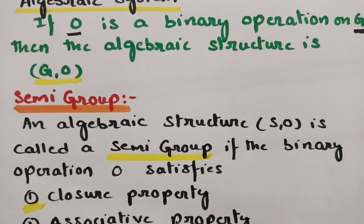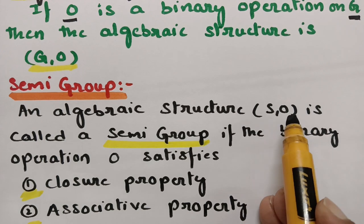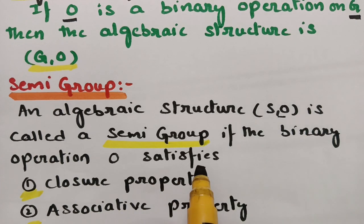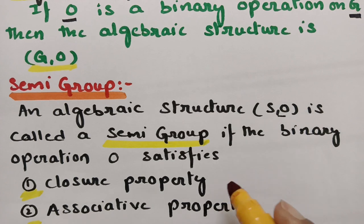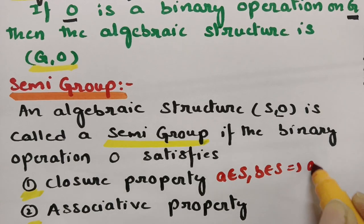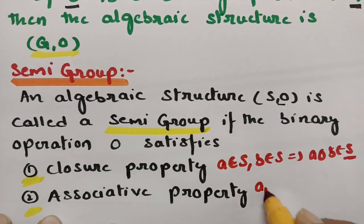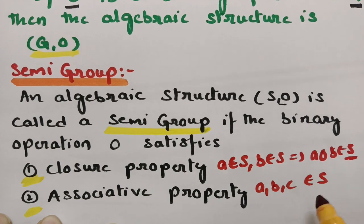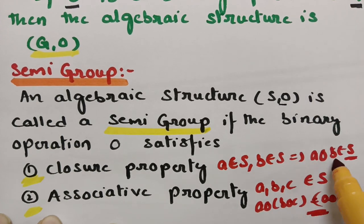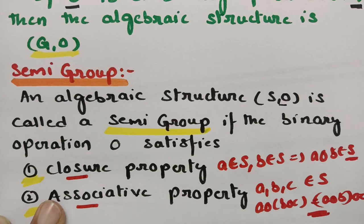What is a semi-group? An algebraic structure (S, circle) is called a semi-group if the binary operation satisfies two properties. First is the closure property: if A belongs to S and B belongs to S, then A circle B should also belong to S. Second is the associative property: if A, B, C belong to S, then (A circle B) circle C should equal A circle (B circle C). If it satisfies both properties, then it is a semi-group.